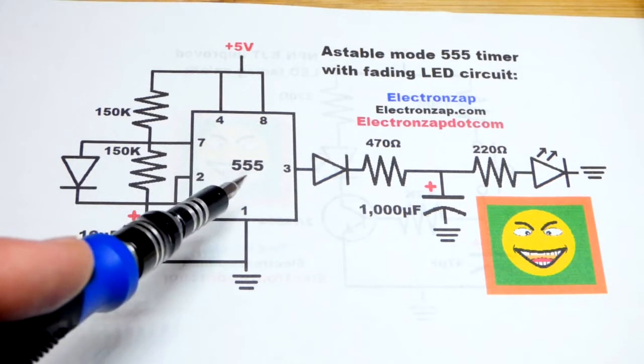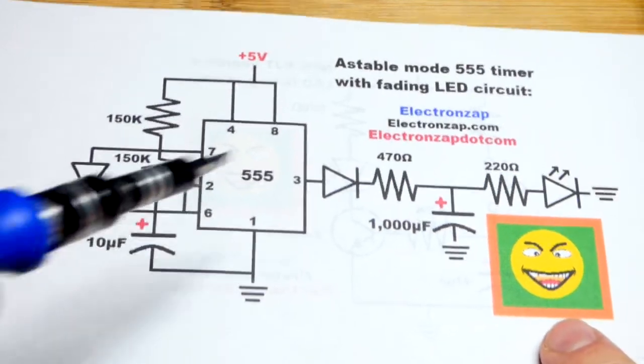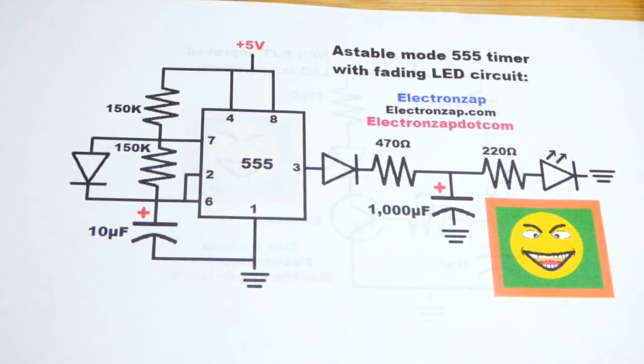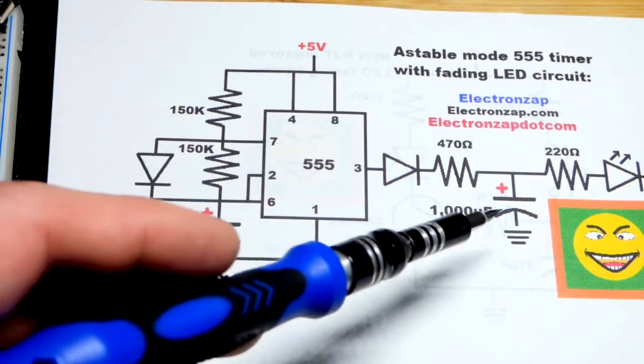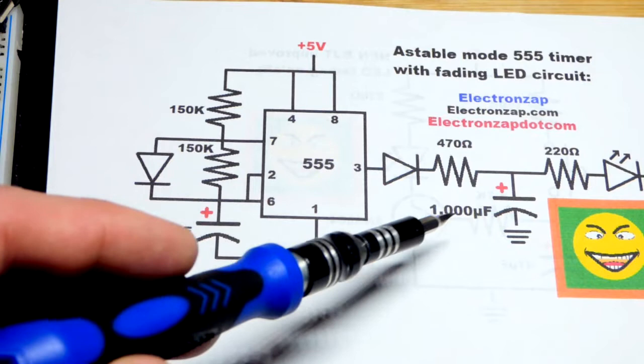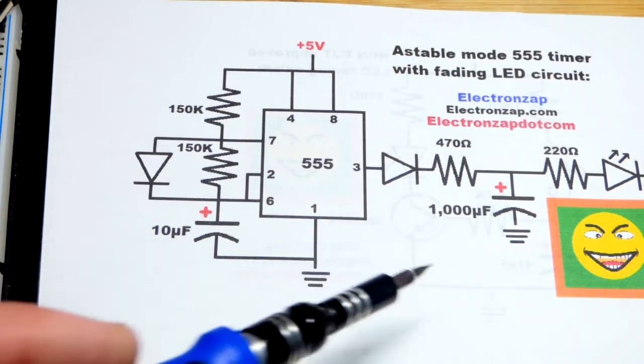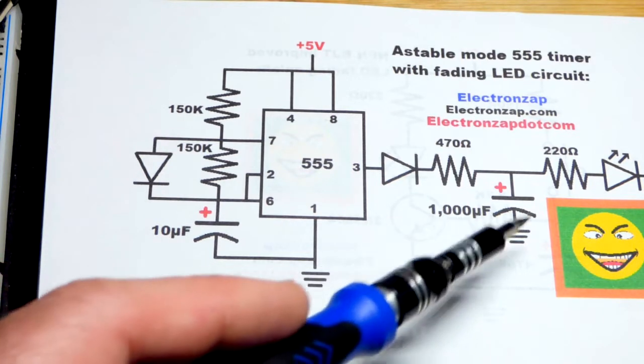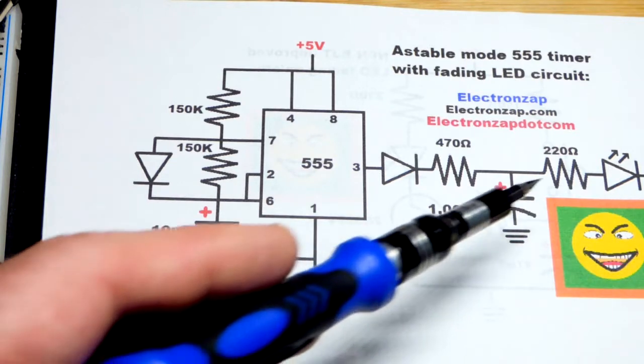We're going to use the 555 timer to control the charging and discharging, wiring it in astable mode like that. So we will look at the circuitry. I'm going to use a 1000 microfarad capacitor. We need a relatively large value and that's about the largest I work with, other than super capacitors.